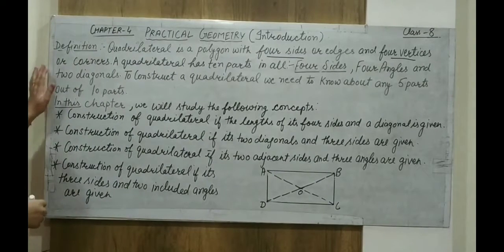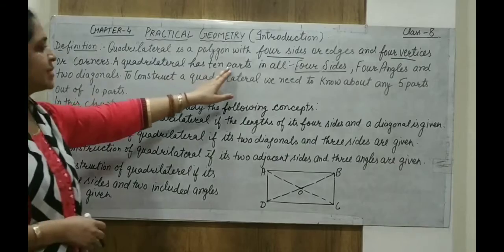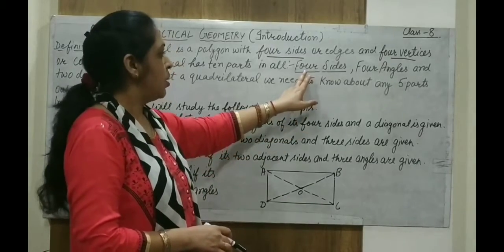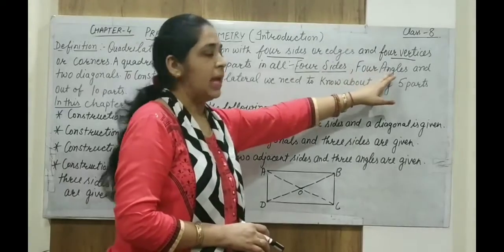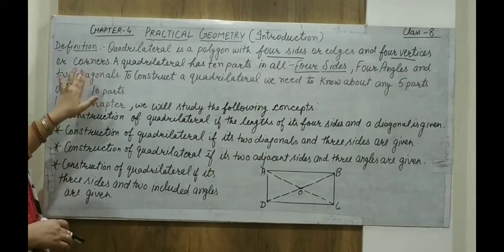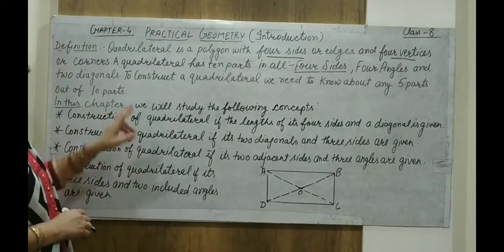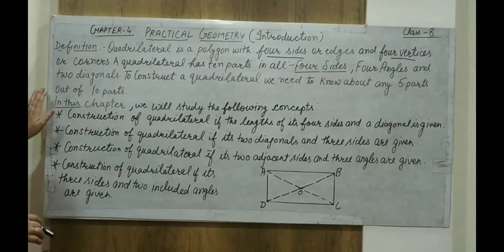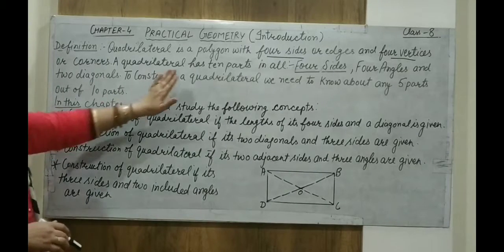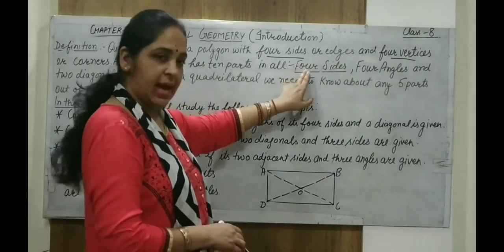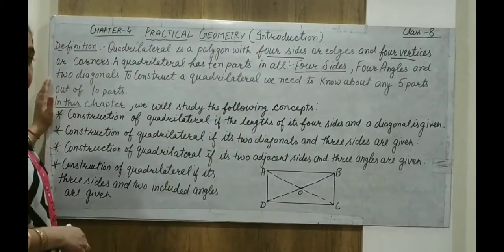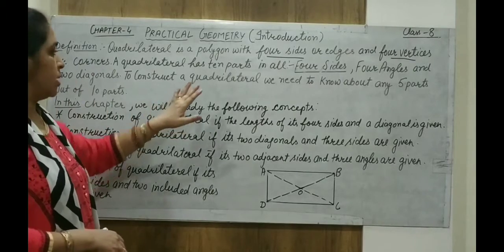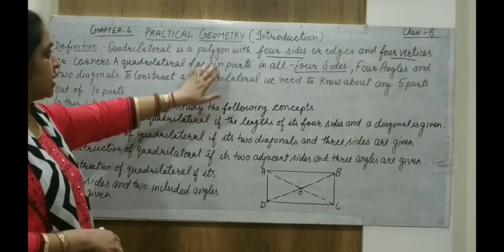Vertex, or we can say corners. A quadrilateral has ten parts in all. These ten parts are: four sides, four angles, and two diagonals, which are used to construct a quadrilateral. To construct a quadrilateral, we need to know any five parts out of these ten parts. We must have five parts given to construct a quadrilateral using geometry.